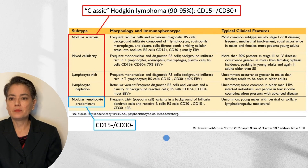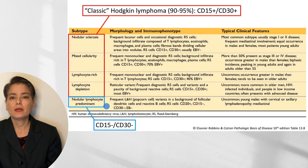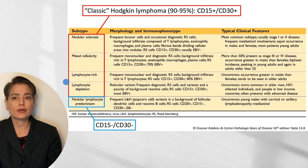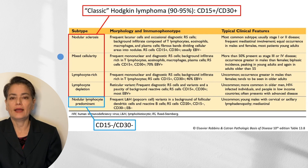This is a table from Robbins and Cotran Pathologic Basis of Disease providing a nice overview of the five types of Hodgkin lymphoma. We divide these into classic Hodgkin lymphoma — which includes nodular sclerosis, mixed cellularity, lymphocyte-rich, and lymphocyte-depleted variants — accounting for 90% to 95% of cases, with nodular sclerosis being most common, followed by mixed cellularity.